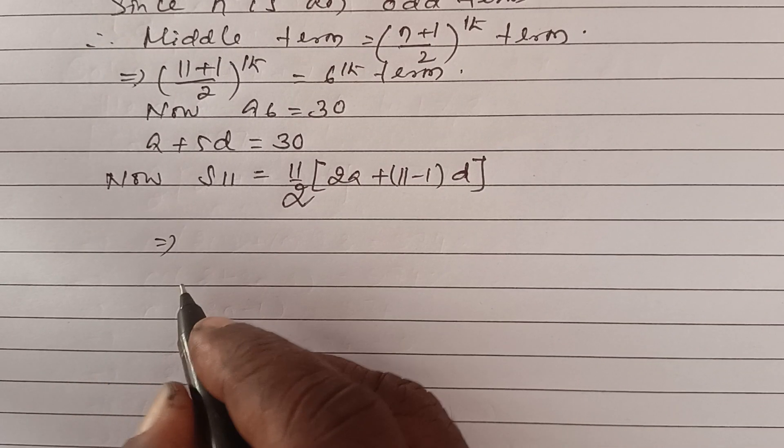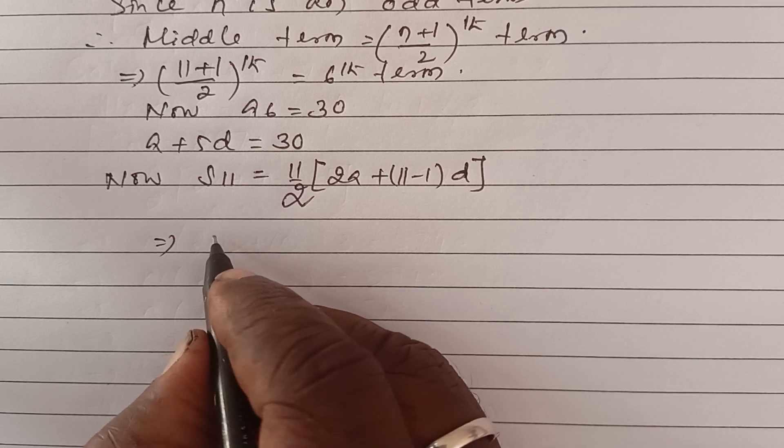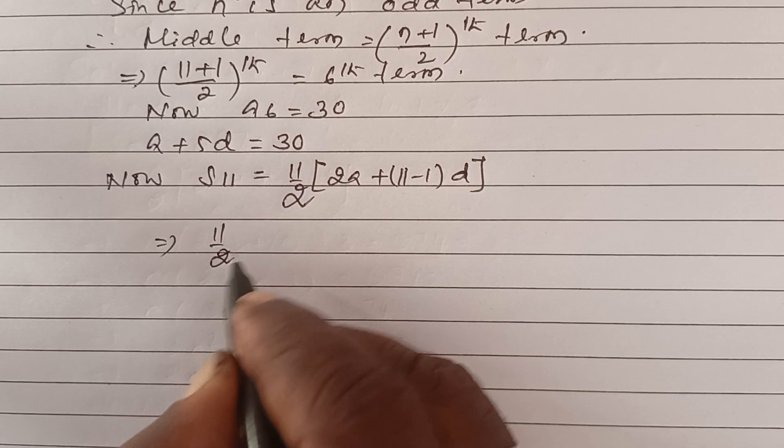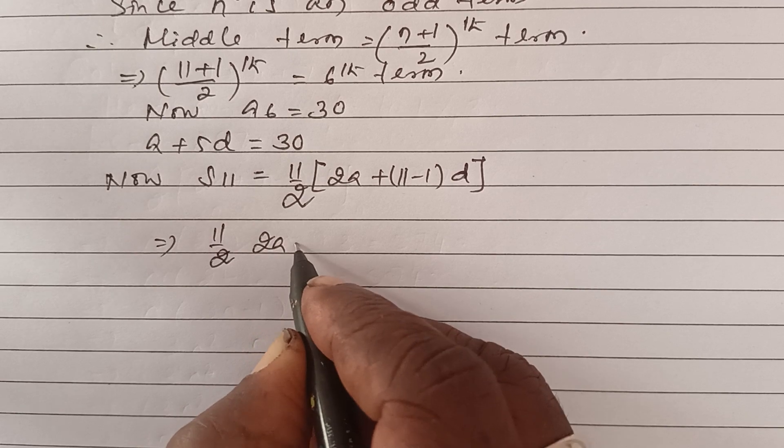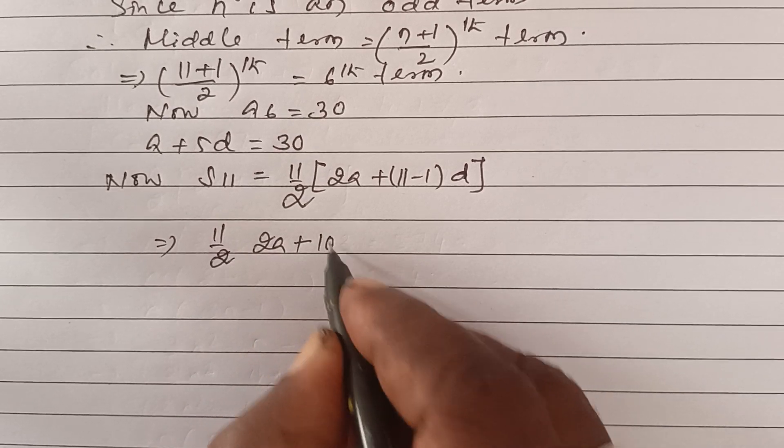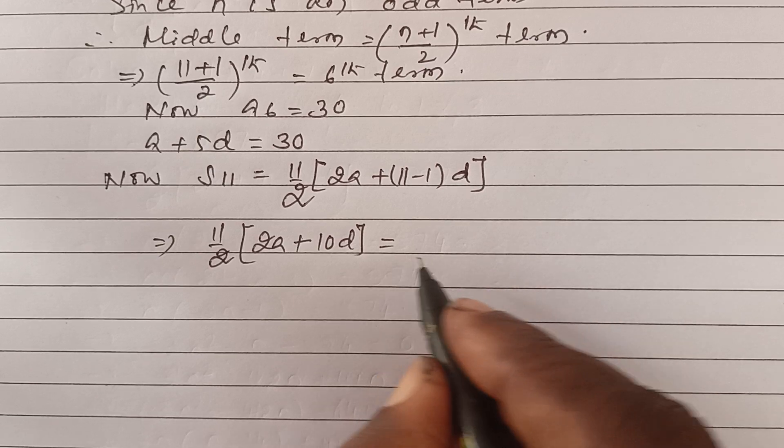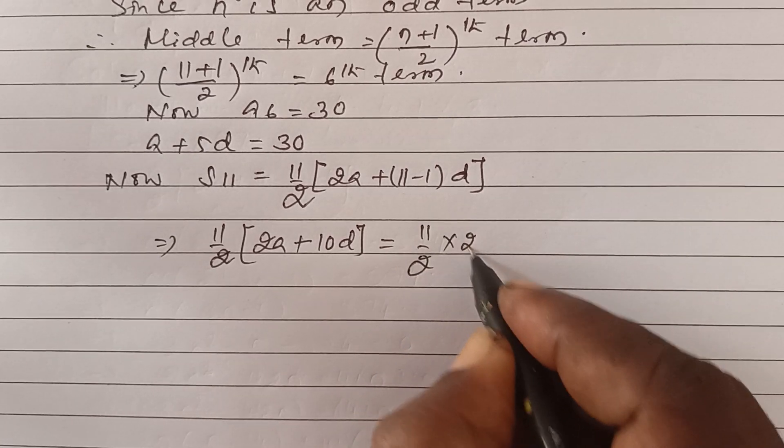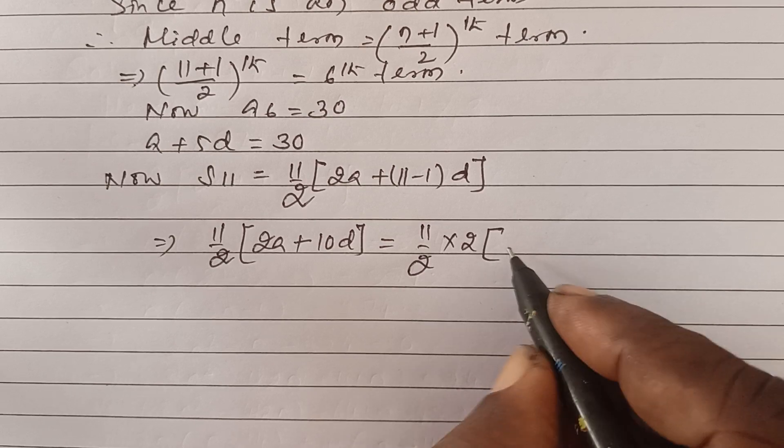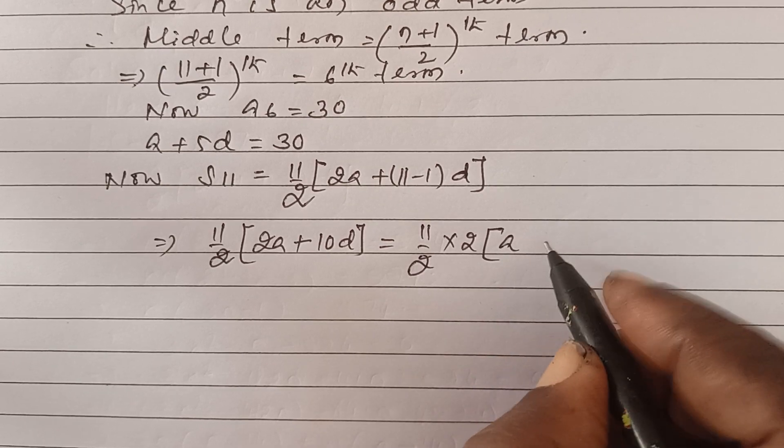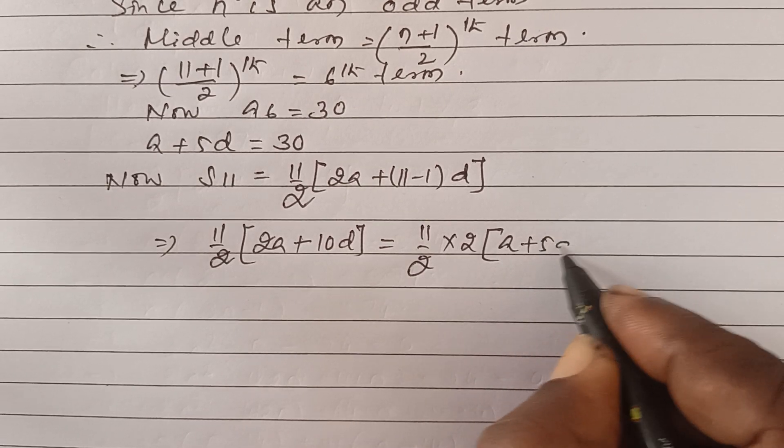This is 11 by 2 times 2a plus 10d. Taking 11 by 2 and 2 common, the rest is a plus 5d.